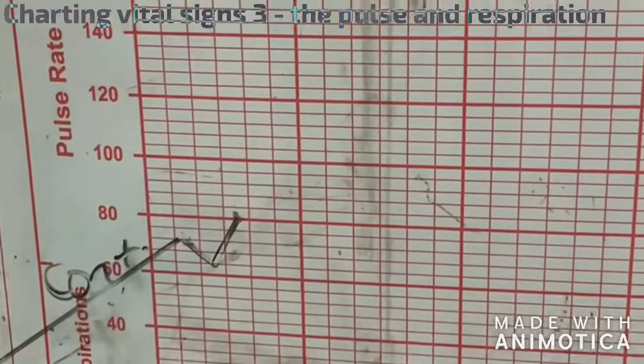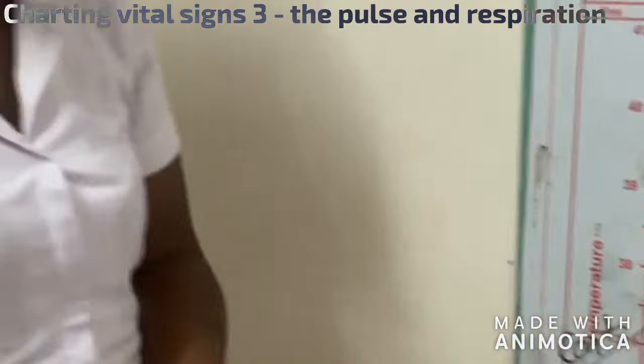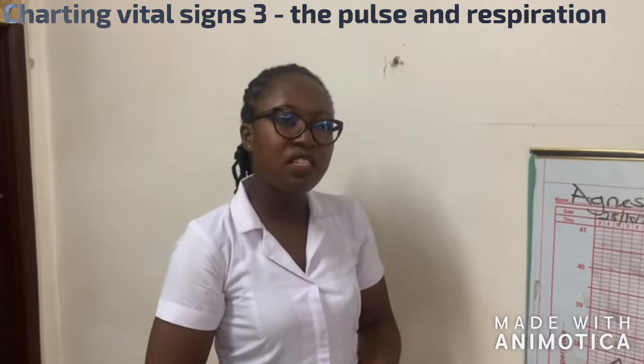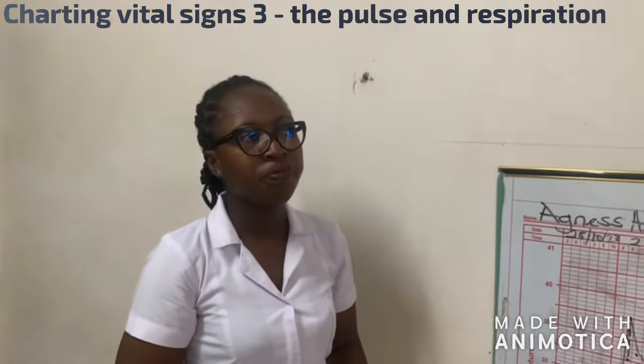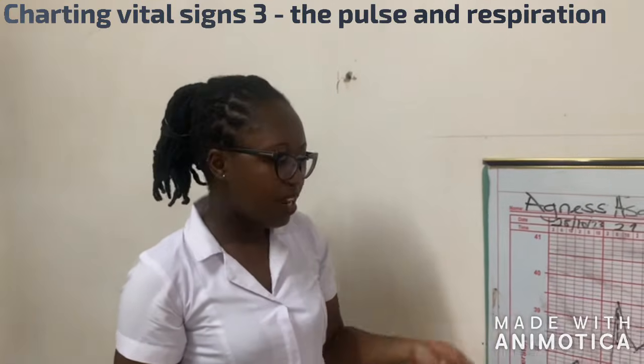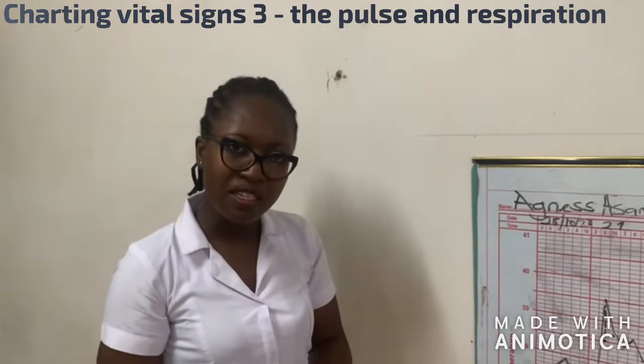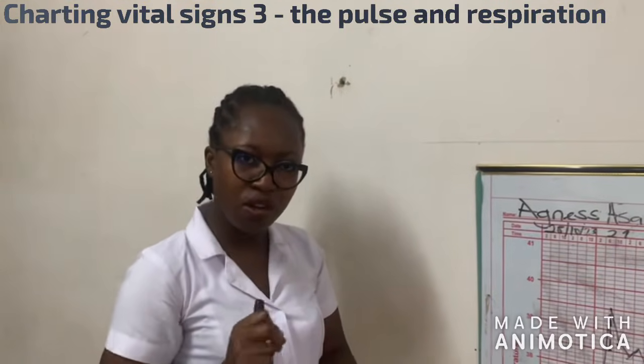This is how it's done. One thing you should notice is that sometimes you can get a figure that you cannot find on the chart. Let's say you get 63 or 62. You can't find it on the chart. So the advisable one is that you chart at 64 or at 60. Then in the nurses' notes, you write the actual figure.